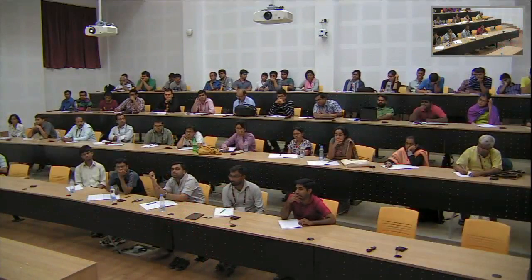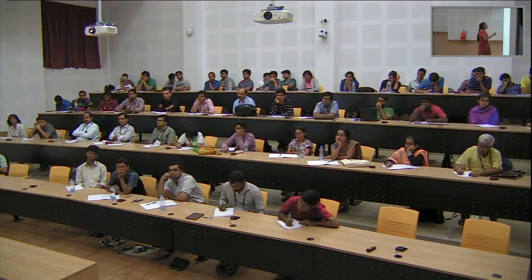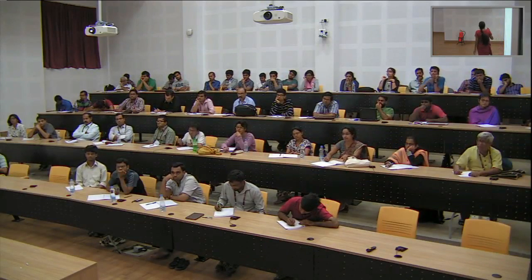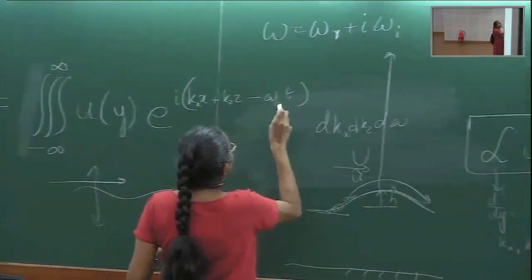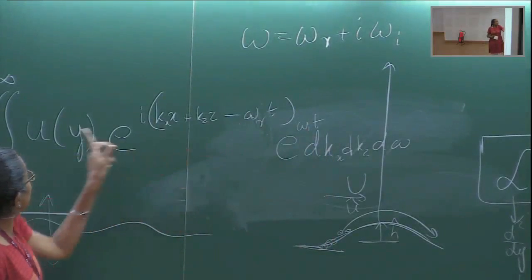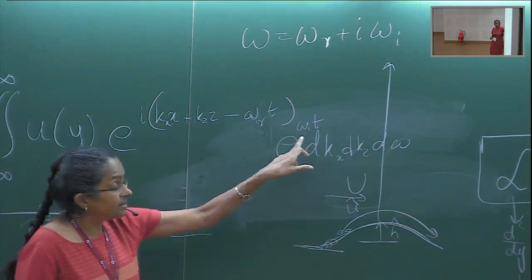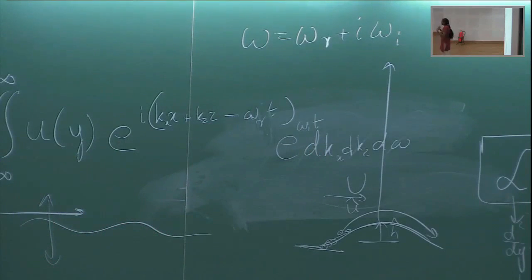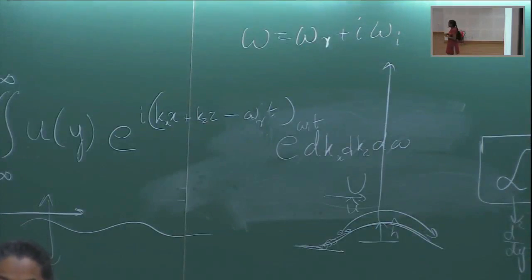Omega can be a complex quantity. Even if this is a real operator, you can get a complex eigenvalue. When omega is a complex quantity, I write it as ω = ω_real + i·ω_imaginary. When I plug it back in, I can pull out the imaginary part, so this becomes ω_real times e^{ω_imaginary · t}. The sign of the imaginary part decides whether it's growing or decaying. If omega_i is negative, this whole thing will be dying in time.